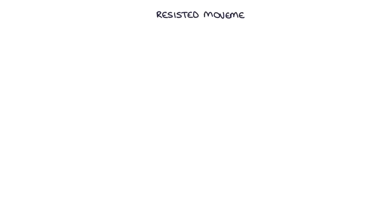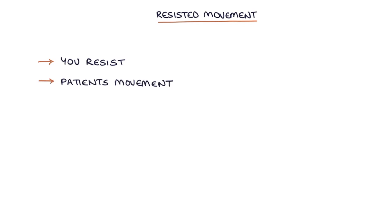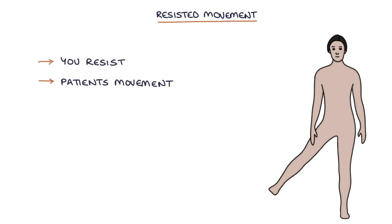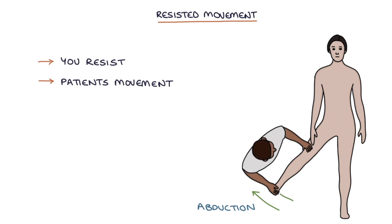To perform resisted movements, you resist while the patient performs a movement. For example, with the patient lying supine or on their back, ask them to abduct their leg at the hip. While they do this, you apply resistance in the opposite direction to their movement. This causes the soft tissues associated with the bursa to tighten, causing pain. Pain on resisted movement supports the diagnosis of bursitis.